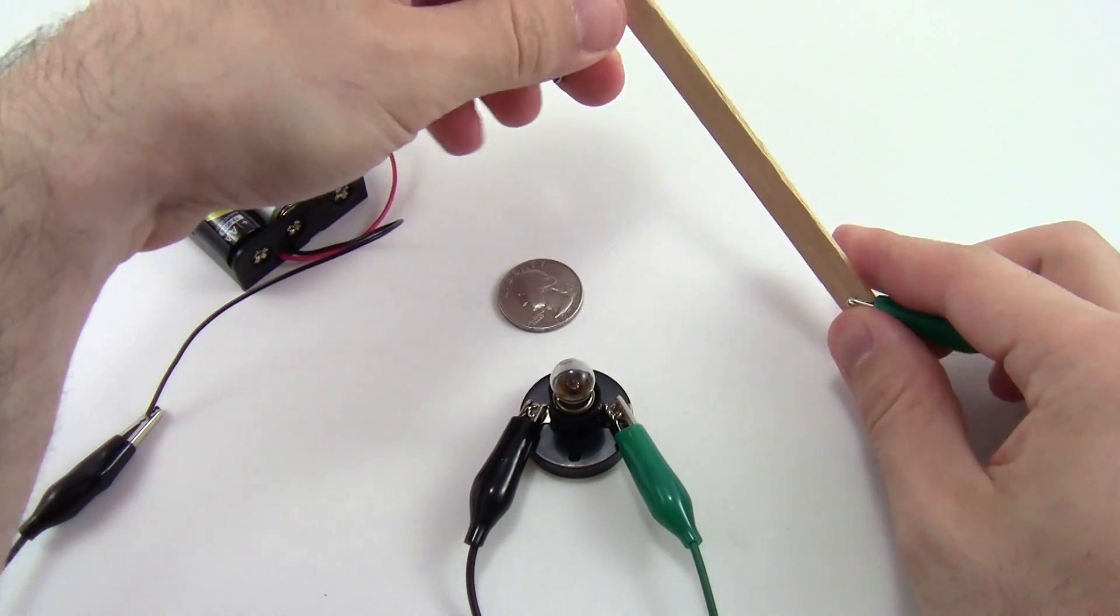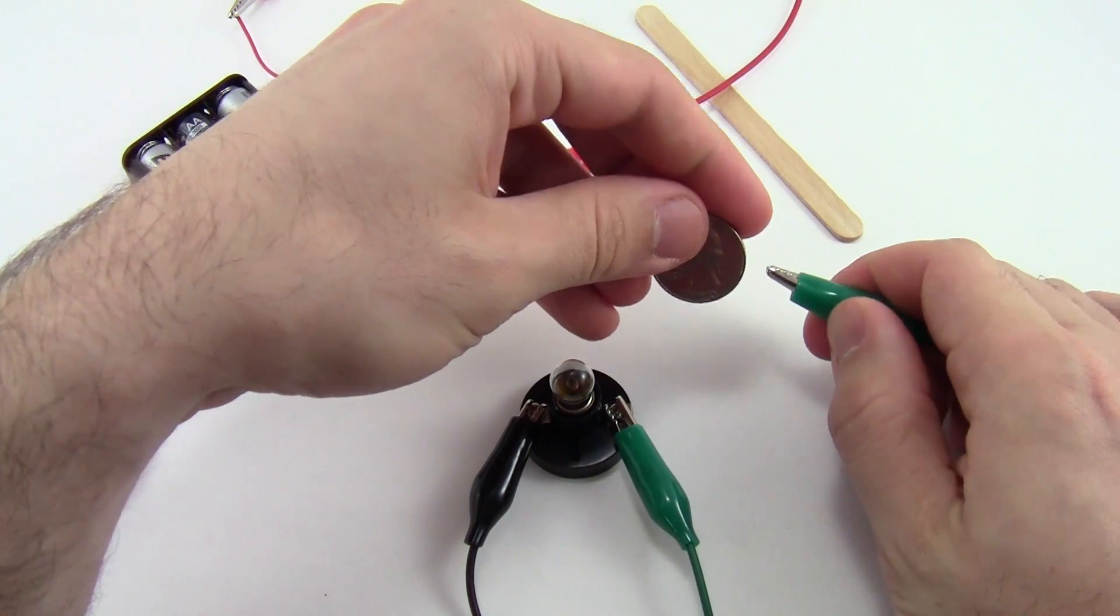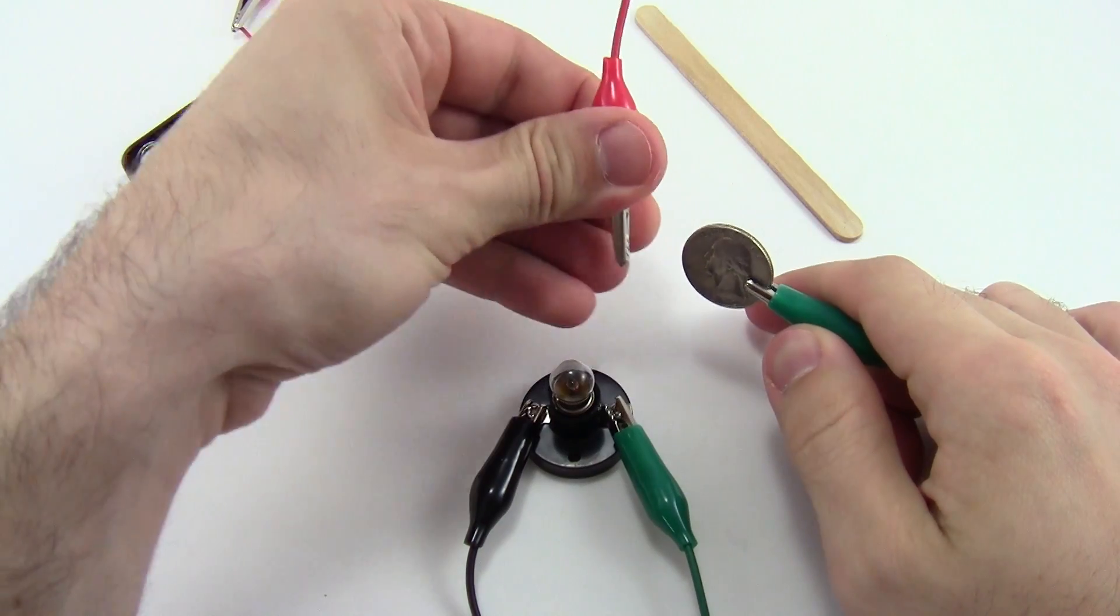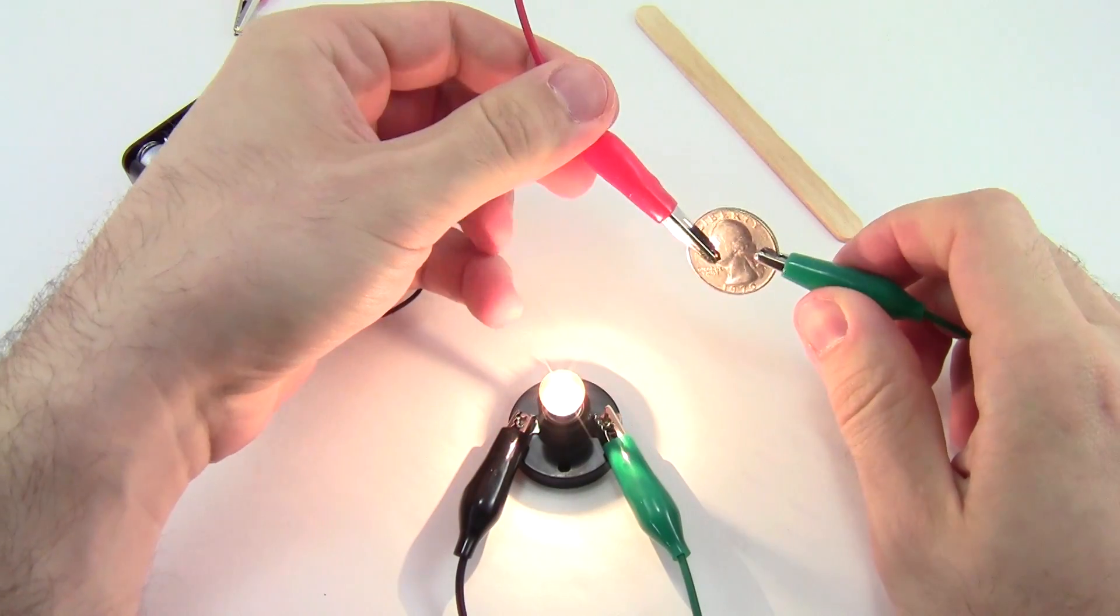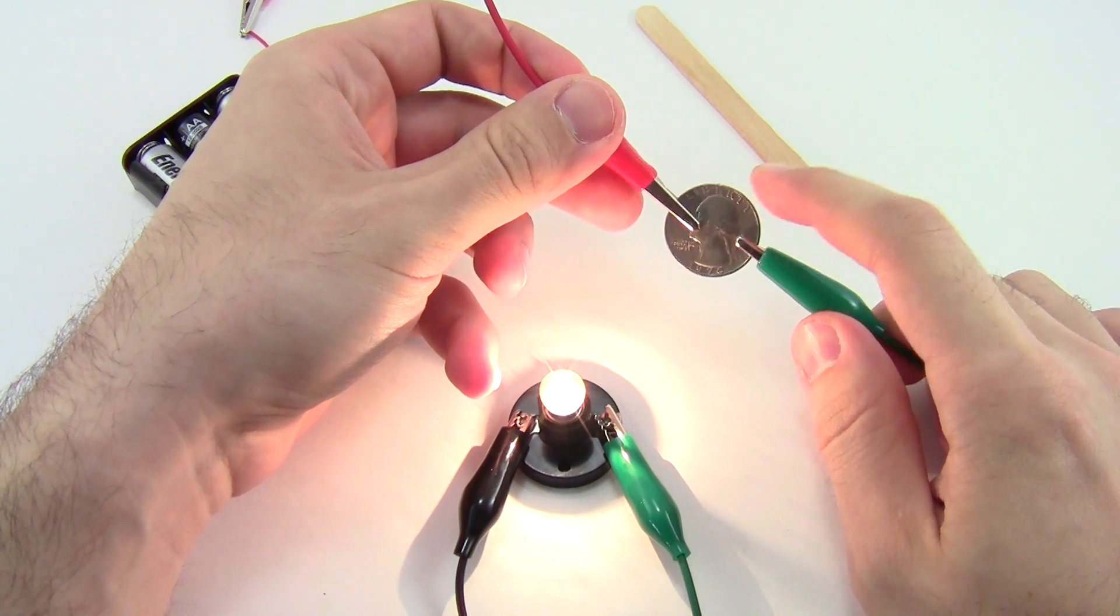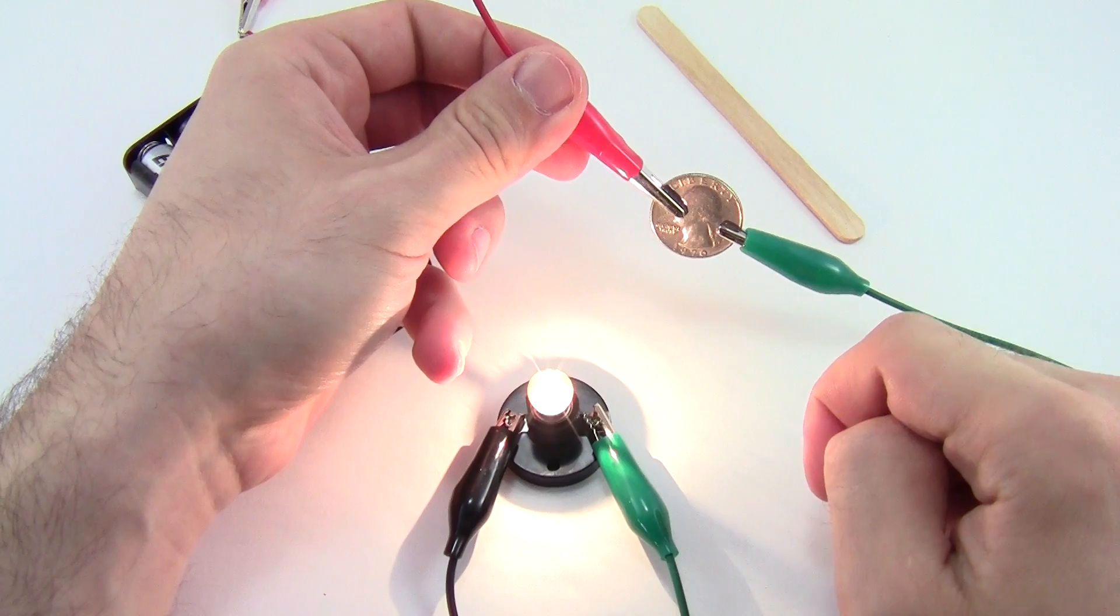Now I'm going to remove my alligator clips and try with this quarter. Again, I'm going to connect to both sides of the quarter with the alligator clips, and notice that now the light bulb lights up. This means that the quarter is a conductor, and it does let electricity flow in a complete circuit and through the light bulb.